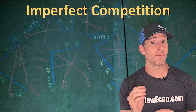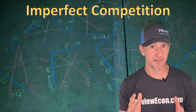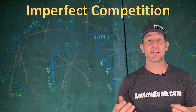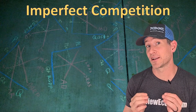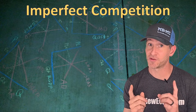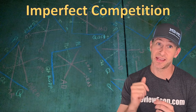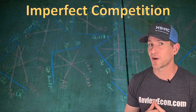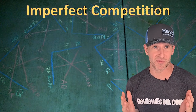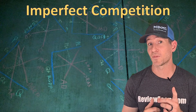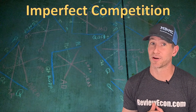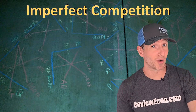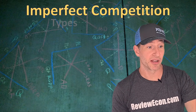In Unit 2 you learned all about perfectly competitive markets — that's the supply and demand graph. And in Unit 3 you learned about perfectly competitive firms, the individual businesses within a perfectly competitive market. But the reality is that most markets are not perfectly competitive. In fact, most markets are imperfectly competitive. So let's talk about the different types of imperfectly competitive markets.